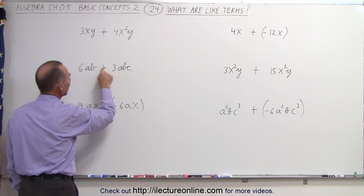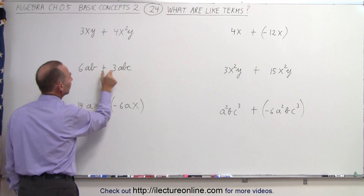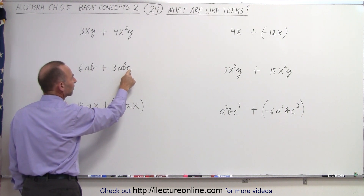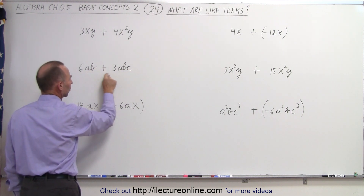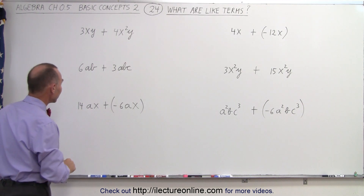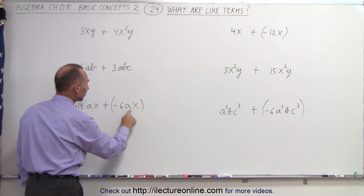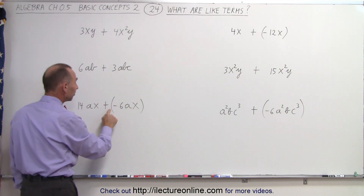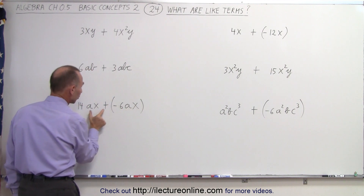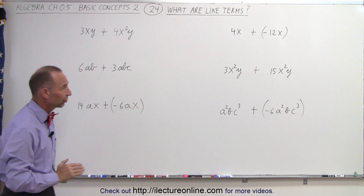Here we have an ab and we have an abc. Even though ab appears here and ab appears there, this one is also multiplied times c, while this one is not, so the letter portions are not the same — these are not like terms. And finally, we have an ax here and a negative 6ax. The ax and the ax on both terms are exactly the same, so these are like terms.